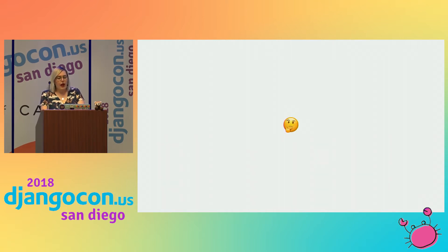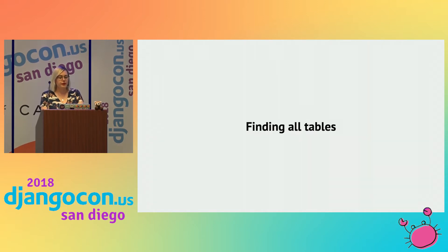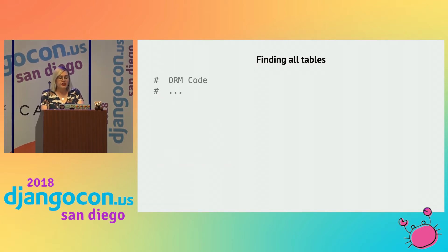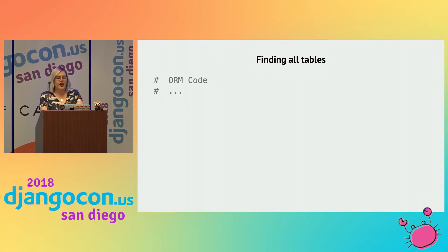So how would I, as a database nerd, interact with it? In an unknown system, the first thing I want to do is find all the tables — all of them. Depending on what flavor of database I'm used to, I could run SHOW TABLES or SELECT star FROM dba.tables. But we're not in a database console, we're in the ORM. To list all the tables in a new Django project via the ORM, there's no good way. And this is what made me get stuck for a little bit. But I worked it out, and now I'm going to tell you.